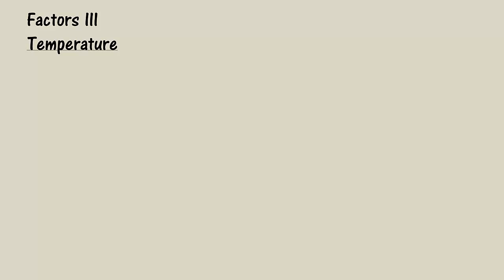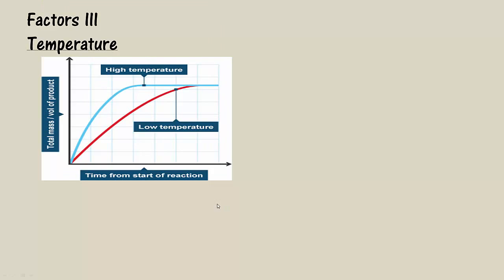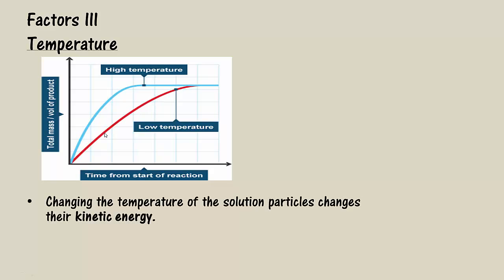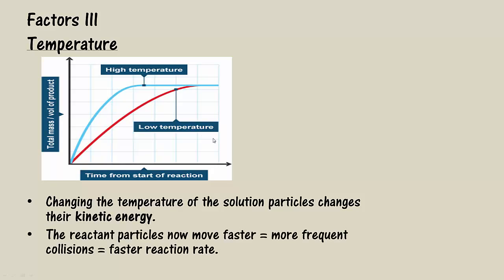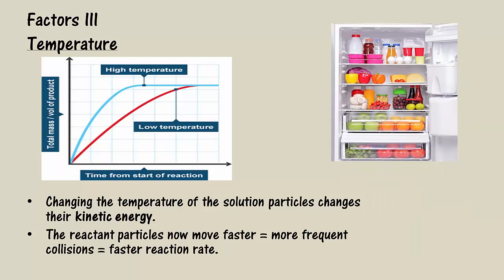The third factor is the effect of changing the temperature. At a higher temperature, the products form in a shorter amount of time than at a lower temperature. So changing the temperature of a solution changes their kinetic energy and therefore their speed. Heating up the solution gives them more kinetic energy and now they move faster. There will be more frequent collisions and a faster reaction rate. Cooling down the substances decreases the kinetic energy and speed, so there will be less collisions occurring each second and a slower reaction rate. This is of course why we put food in the fridge to slow down the rate of its decomposition.